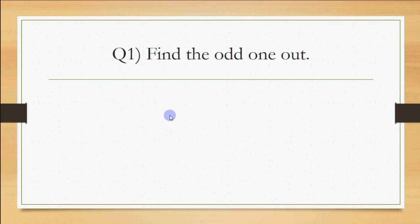The first question says: find the odd one out. You are given some keywords and you have to tell which one is different. The options are int, char, if, and float. int, char, and float are data types, and the different one is 'if', which is used to check a condition. So the odd one out is 'if'.